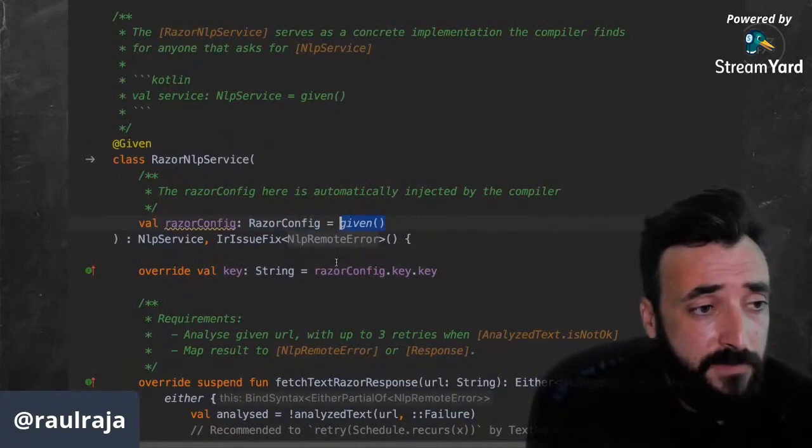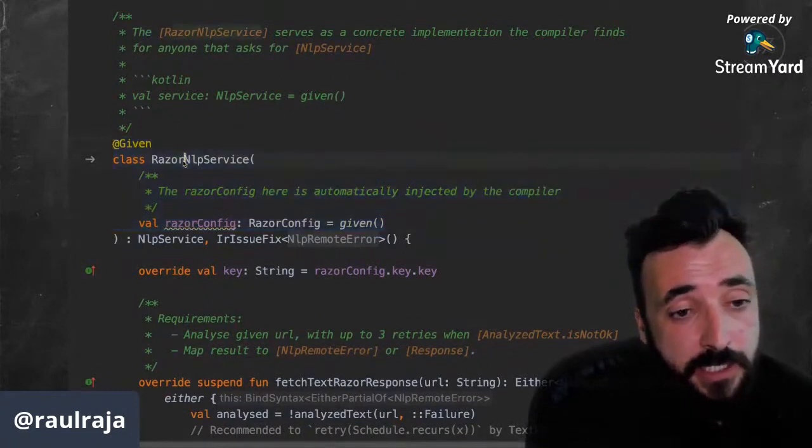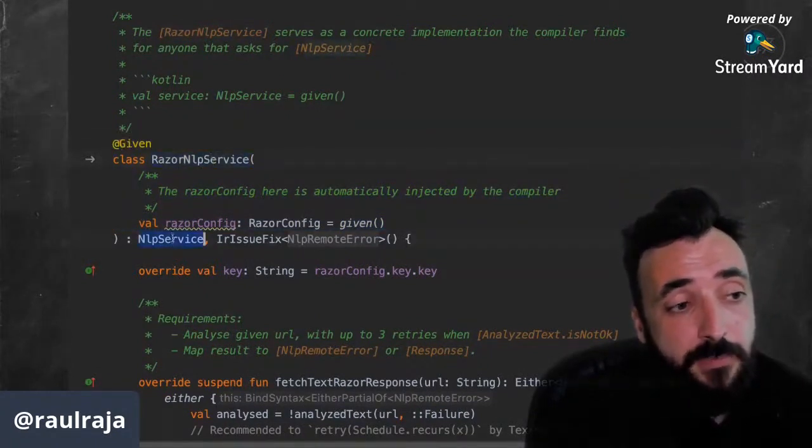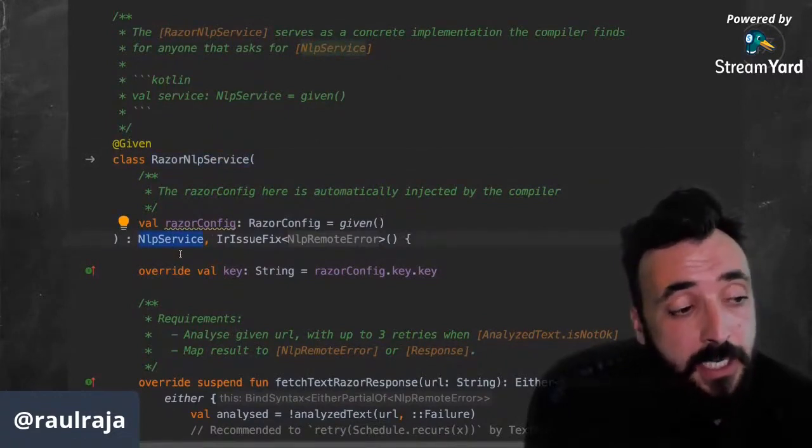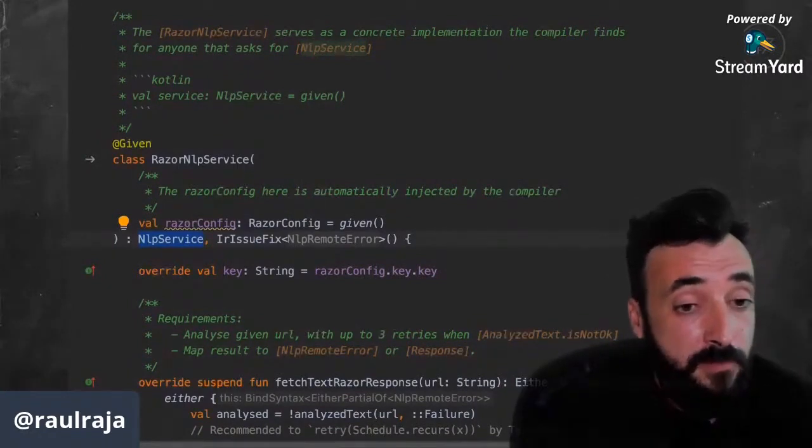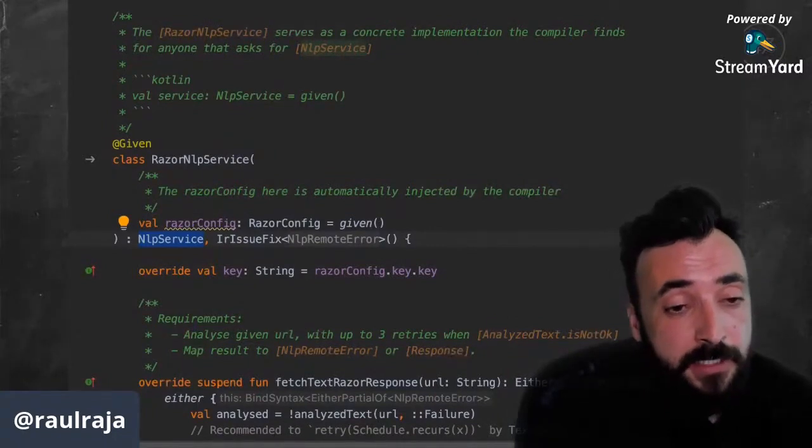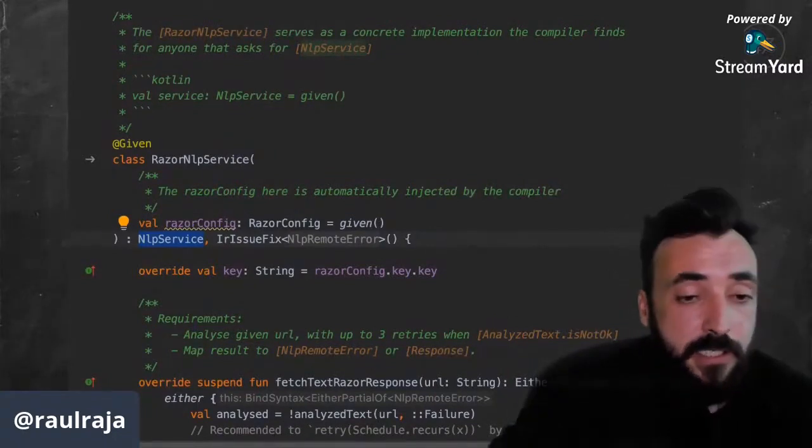And here, what we are seeing is that the entire Razer config will actually become materialized automatically if we also provide given key and given max parallel requests as types. And then we can also see that not only just those simple configuration files, but other more complex ones, like in this case, it's a full blown implementation service. We are here stating that this class provider is the provider for the NLP service. So anytime anyone wants the NLP service, as we're going to see in a second, you can just summon this value and the compiler will find the Razer NLP service and inject it automatically in your code.